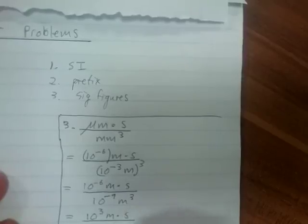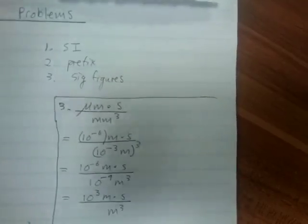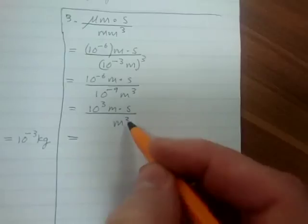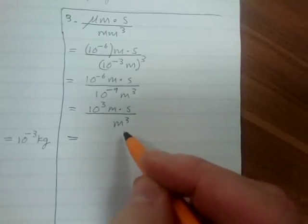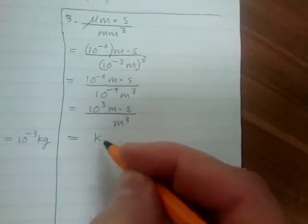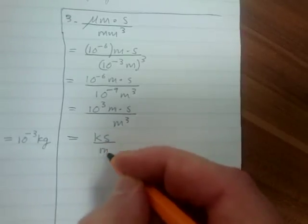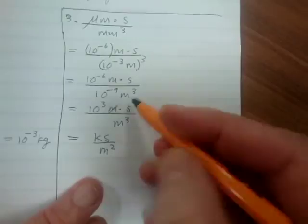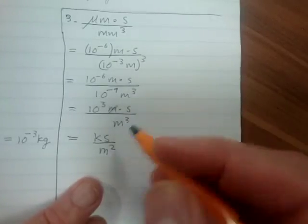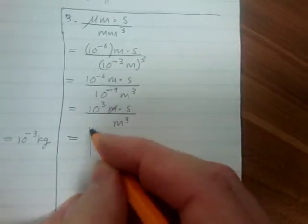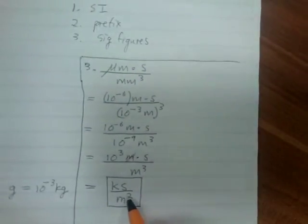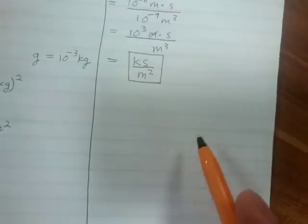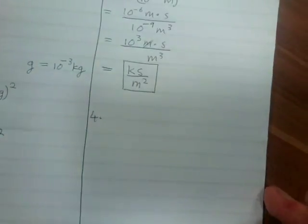Bringing 10 to the minus 9 to the top gives 10 to the 3 meter·second over 10 to the minus 6 meter squared. We can see that meters cancel partially, leaving the meter squared in the denominator. The 10 to the 3 becomes a kilo, so in SI units with the appropriate prefix this becomes kilosecond per meter squared.